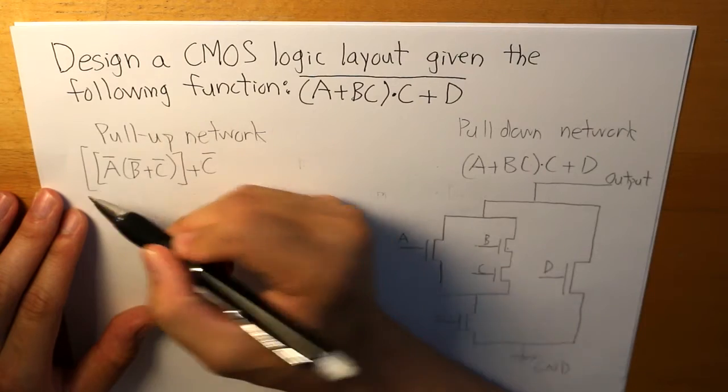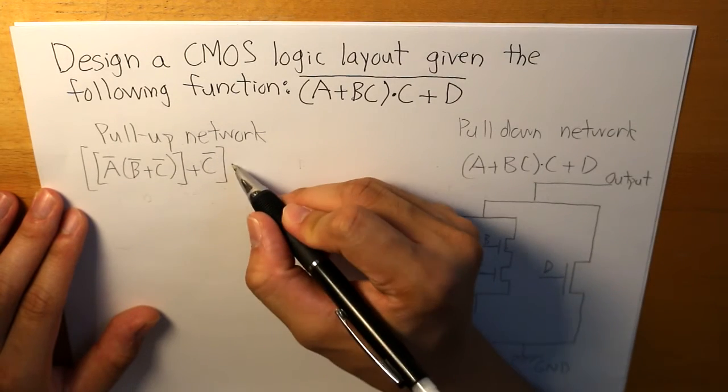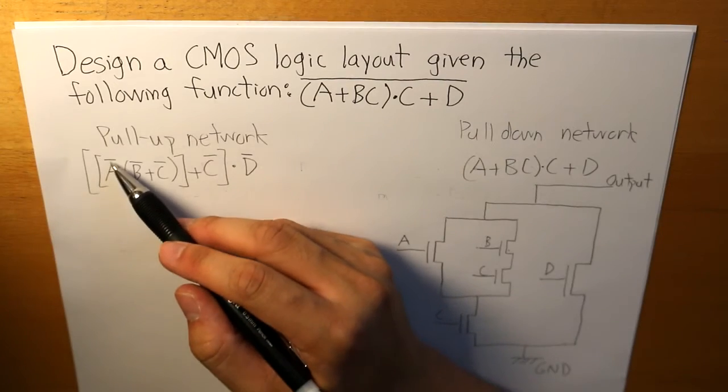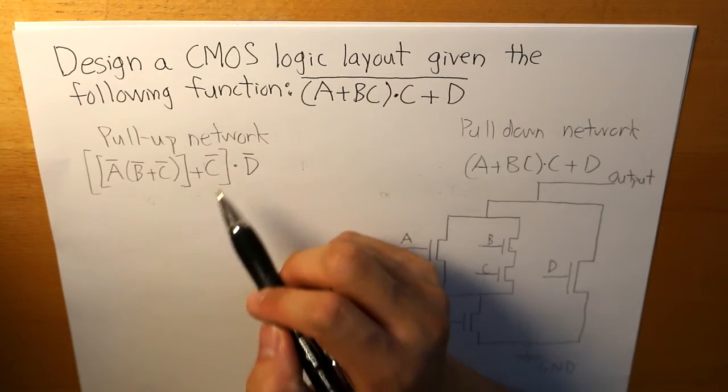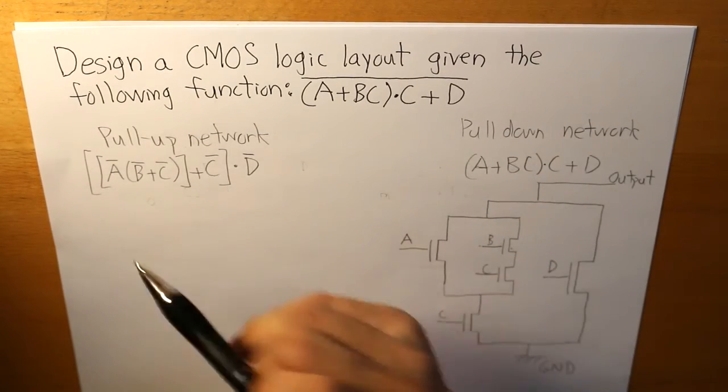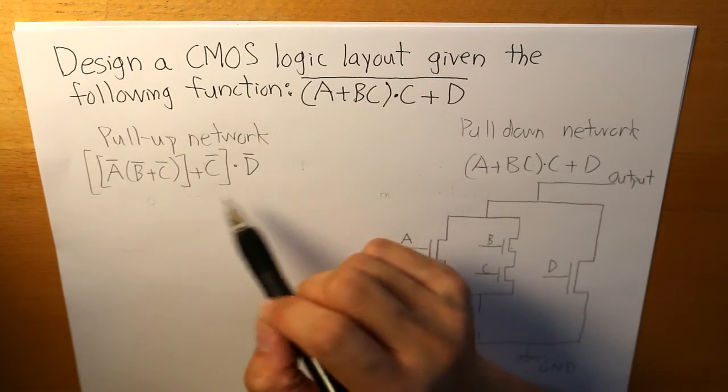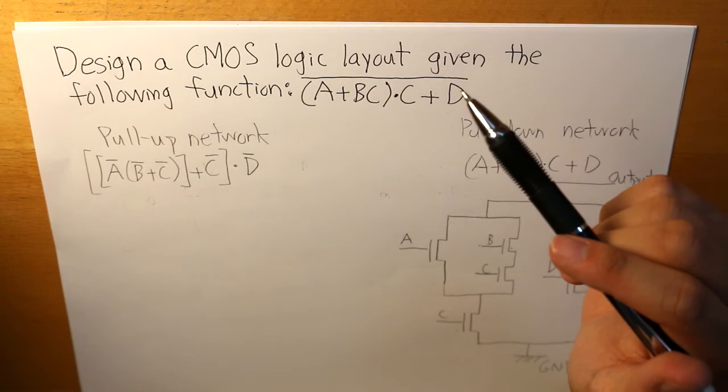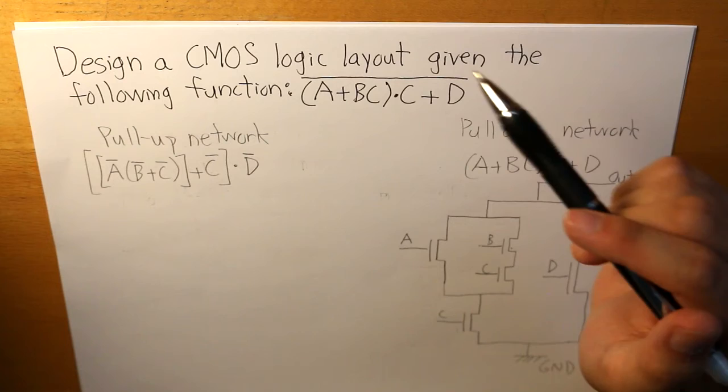And then this entire thing would be in parallel with C. And then this entire thing would be in series with D. And these lines basically represents the inverter, the opposite of it. And this function would basically represent our PMOS layout.